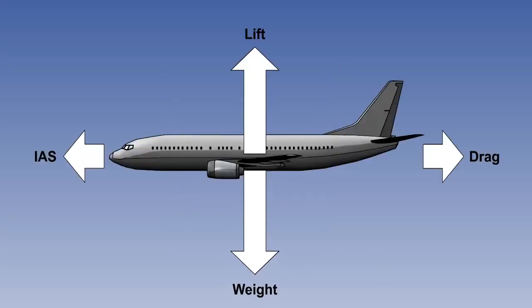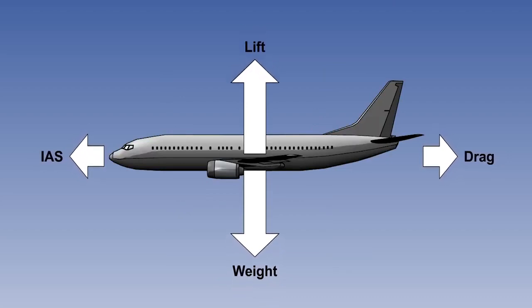If an aircraft's weight changes, it will still be possible to achieve LD max at the same angle of attack as previously, but a change in weight requires a change in IAS to support the weight at the same angle of attack. The lower the weight, the lower the IAS required to stay at the LD max angle of attack, and vice versa.